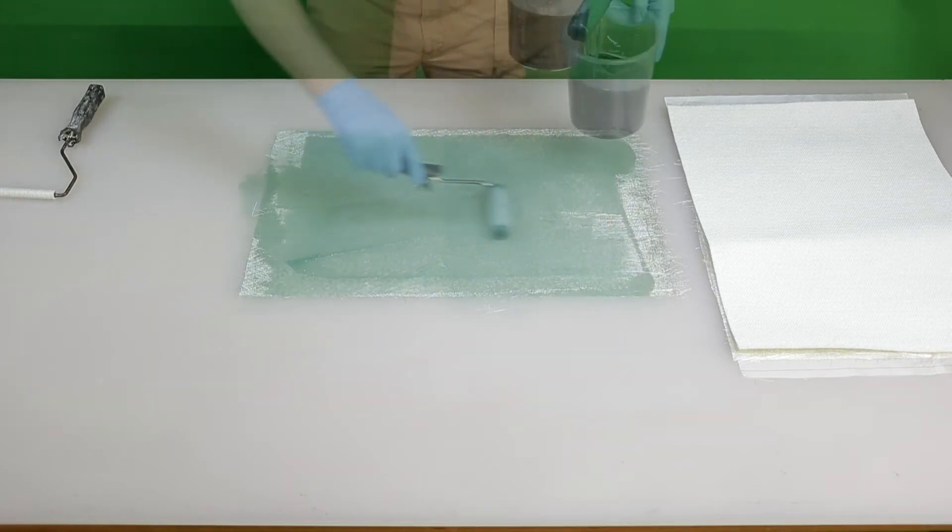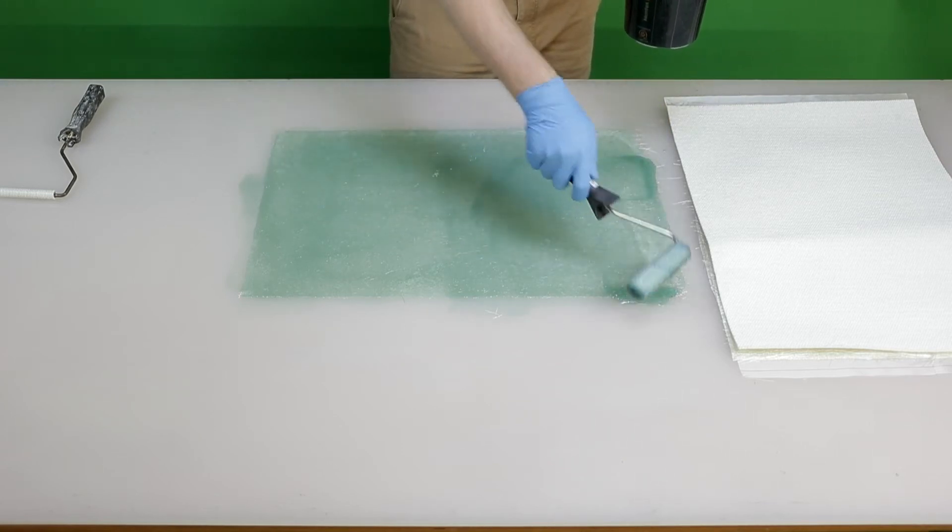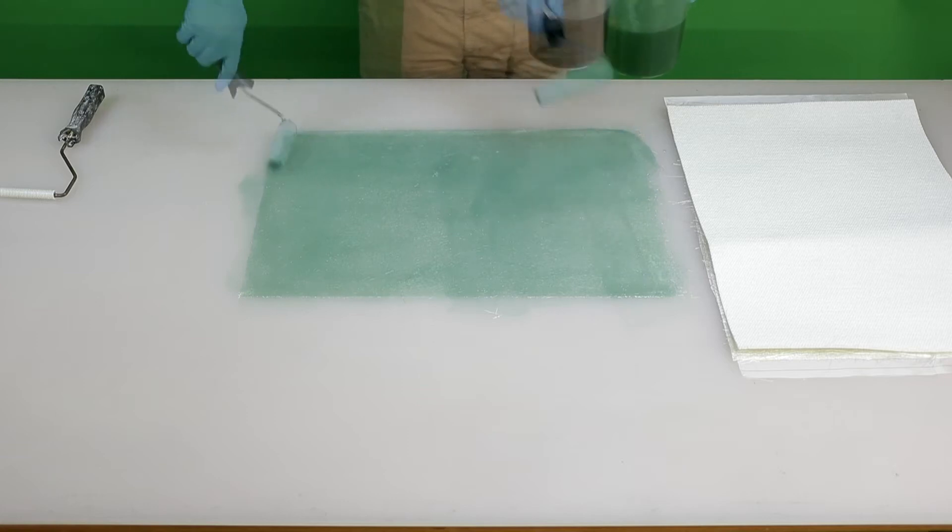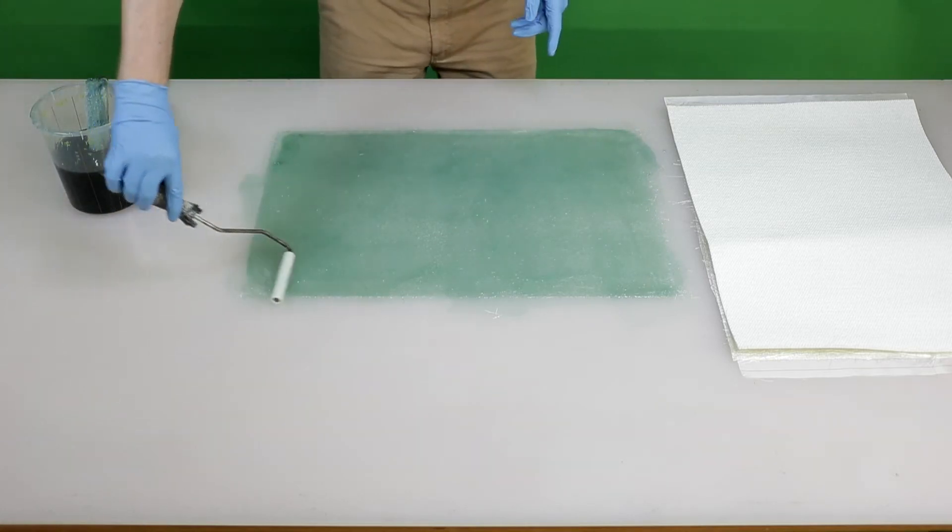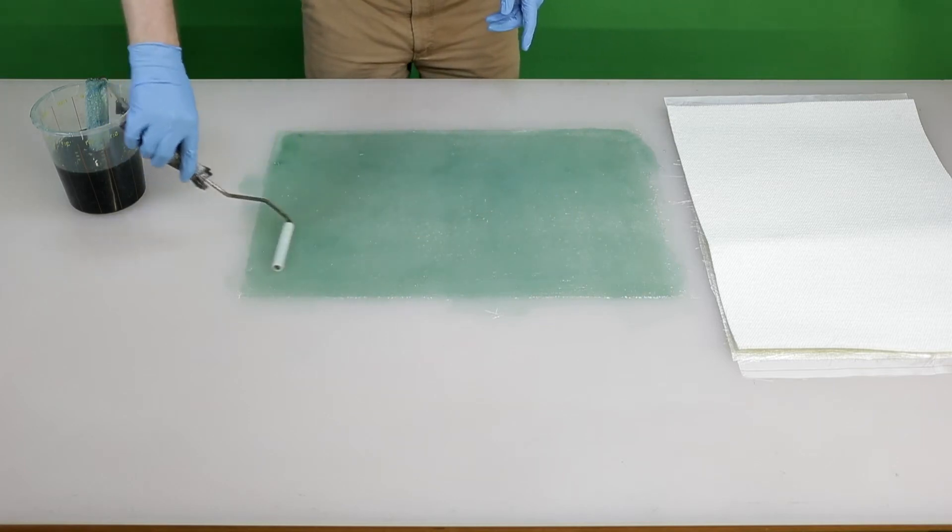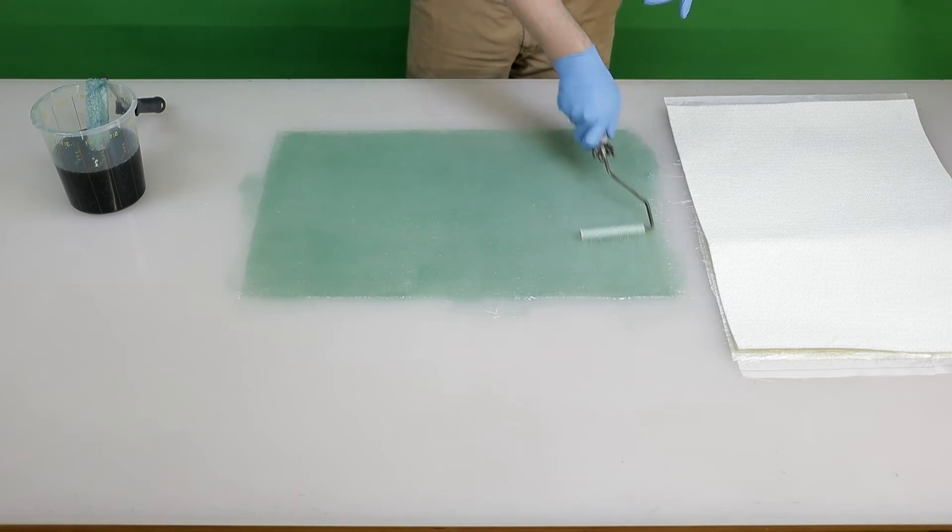We recommend applying the Cormat on a wet or slightly gelled glass layer to get an optimal bond between the core and the glass. We do not recommend waiting until it's fully cured. Should your project not allow this, we recommend sanding the laminate before applying the Cormat, even if you've used a peel ply.